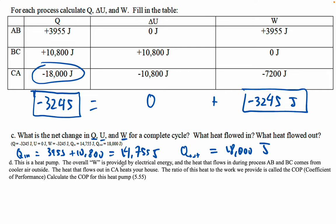So the heat that flows out in CA heats your house. So this is the heat we get: 18,000 joules. And then the work we put in was 3245. Remember, this is work we did on the gas. So if you divide those, you get 18,000 divided by 3245, which is 5.547 or 5.55.